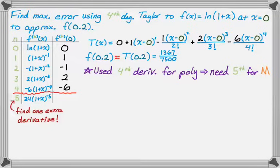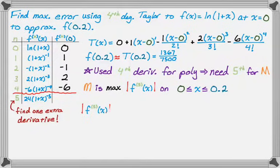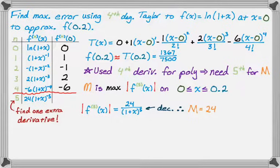M is going to be the maximum of the absolute value of the fifth derivative on the interval from 0 to 0.2. The fifth derivative in this case is 24 over (1 plus x) to the fifth. This function is decreasing, so the maximum occurs at the left endpoint. I substitute 0 in and get 24. So M equals 24. It's almost always the case that the derivative you're looking at is either increasing or decreasing, so M almost always comes from the left or the right endpoint.